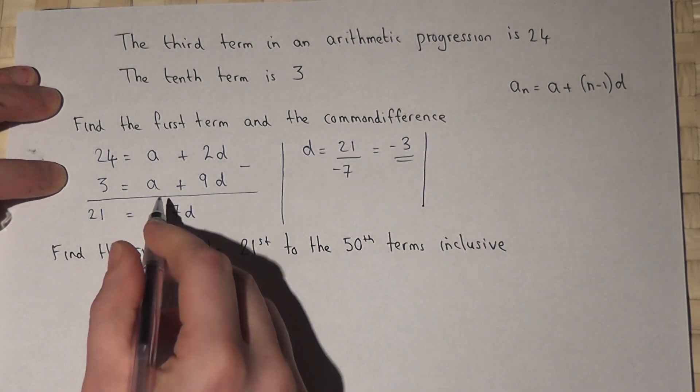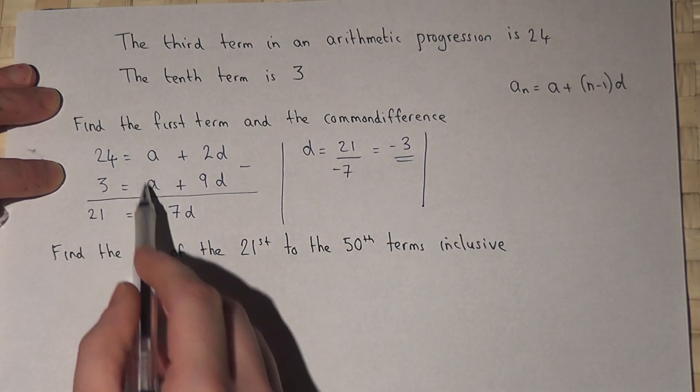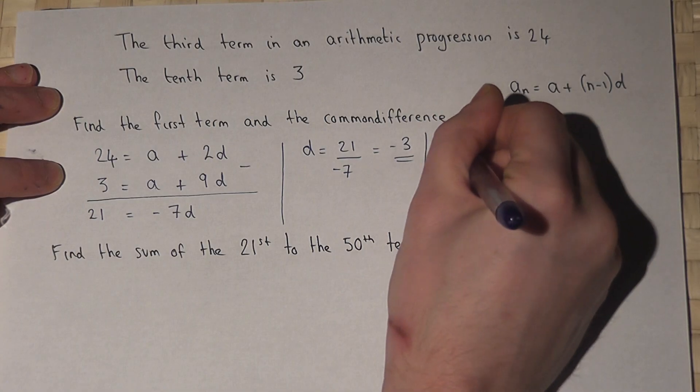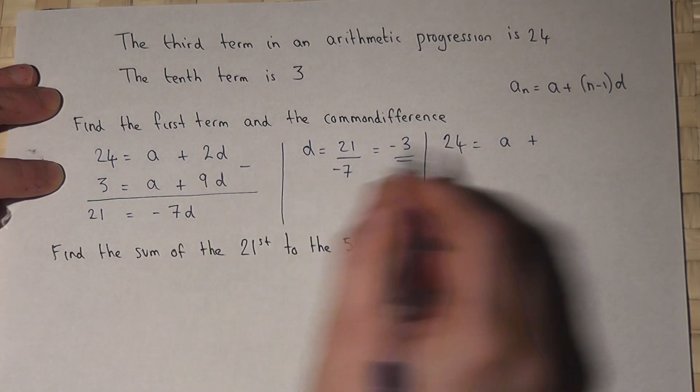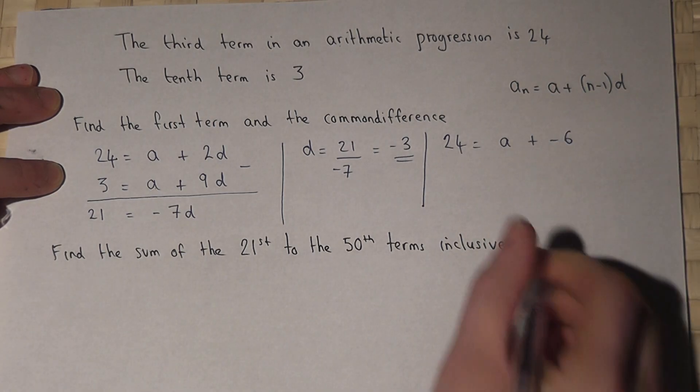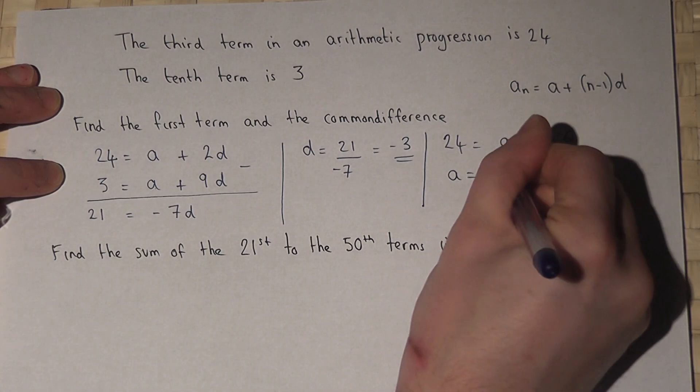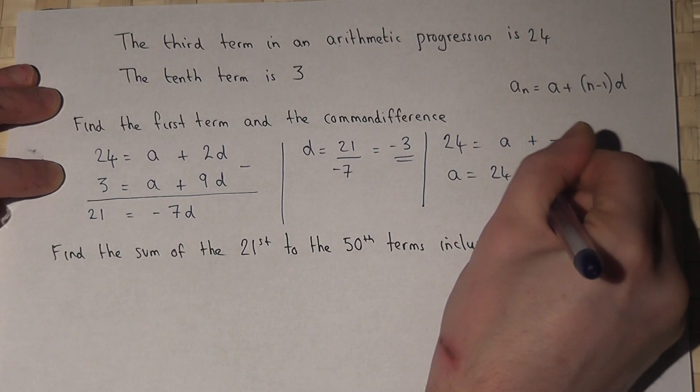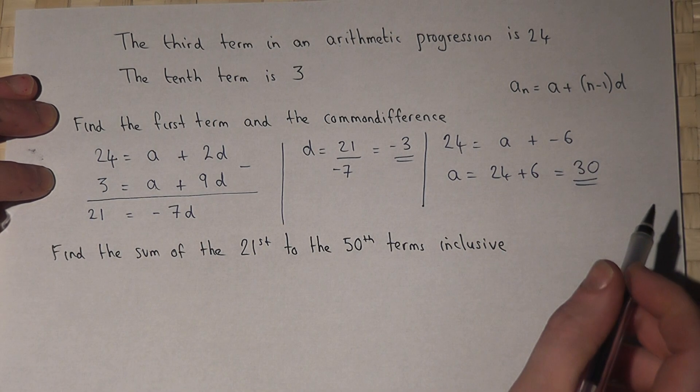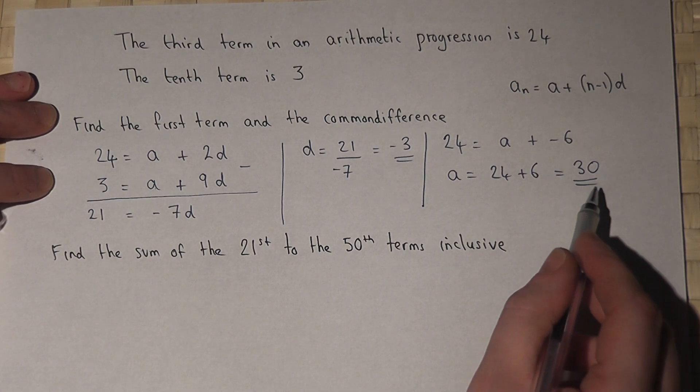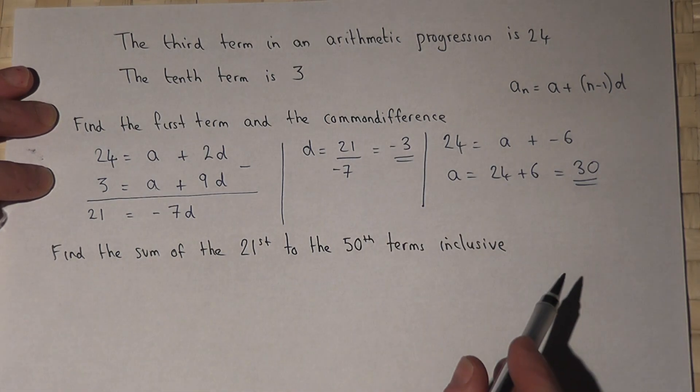To find a, we can use either of these equations. 24 equals a plus 2 lots of d, which is minus 6. So a equals 24 plus 6, which equals 30. So the first term is 30 and the common difference is minus 3.